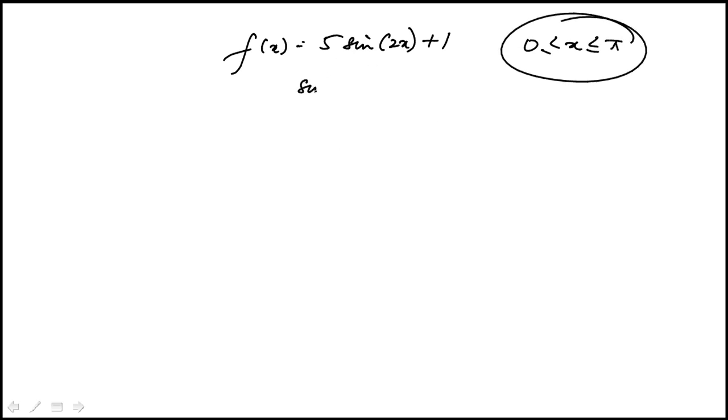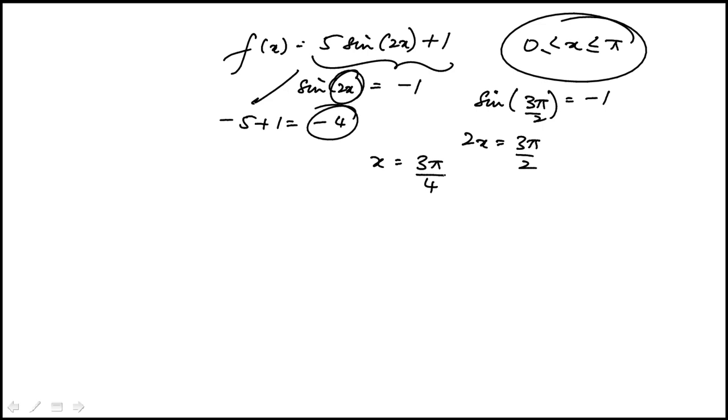The least value would be when sine of 2x is minus 1. In that case the value of the function would be minus 5 plus 1 is minus 4. That's going to happen when sine of 3π over 2 is minus 1. So 2x is 3π over 2. That's going to happen at x equal to 3π over 4. So our minima is at 3π over 4, minus 4.